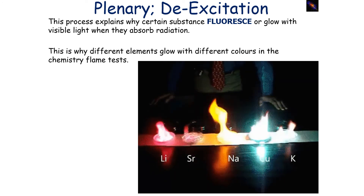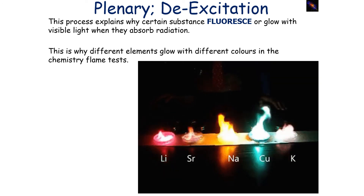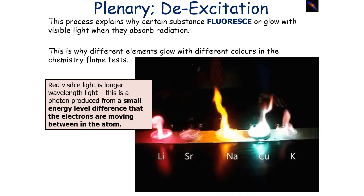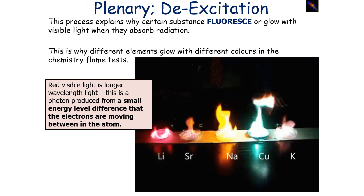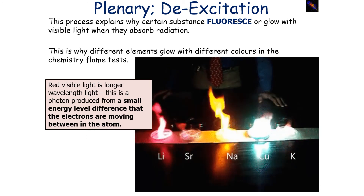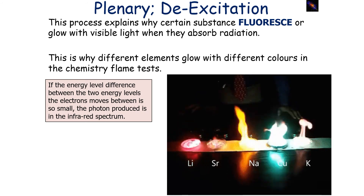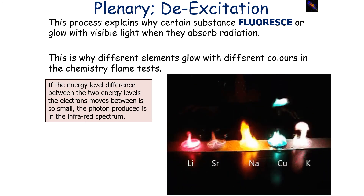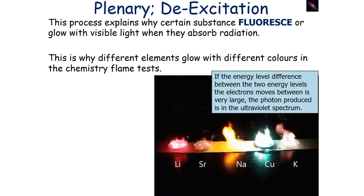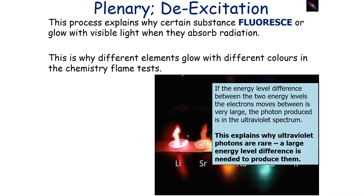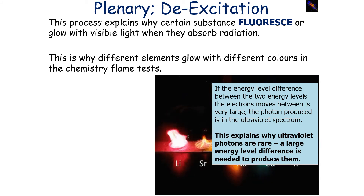This process explains why certain substances fluoresce or glow with visible light when they absorb radiation, and why different elements glow with different colours in the chemistry flame test. Red visible light is longer wavelength light — it's a photon produced from a small energy level difference. Blue visible light is shorter wavelength, produced from a large energy level difference. If the energy level difference is very small, the photon is produced in the infrared spectrum. If the difference is very large, the photon is produced in the ultraviolet spectrum. This explains why ultraviolet photons are so rare — you need a large energy level difference in the atom to produce them.